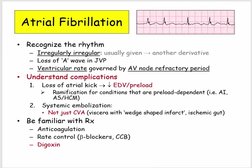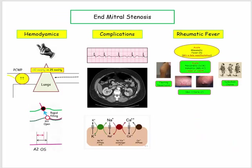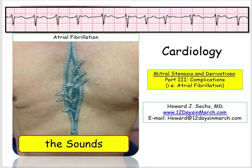Here is a summary slide of the material covered in this section. This concludes our review of mitral stenosis — our first example of how valvular disorders are used on the USMLE Step 1 exam. They start with a presentation of an innocent murmur and assume you can identify it, but then the derivatives come fast and furious from any number of directions. If you loved this presentation on mitral stenosis, wait until you hear what they do with mitral regurgitation. If you have any questions or concerns, please email me at 12 Days in March. Thank you.